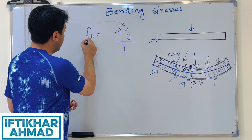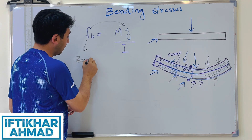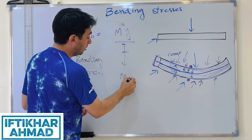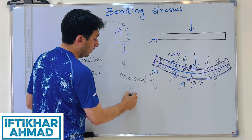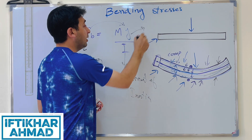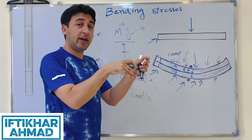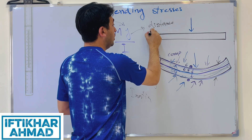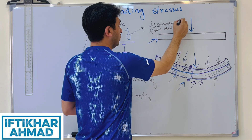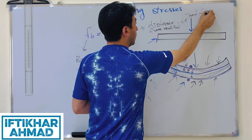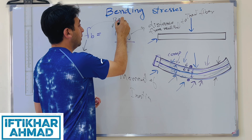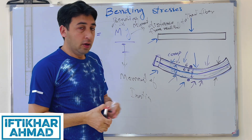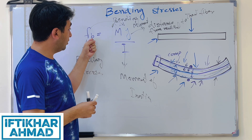So we have the bending stress formula: fb = MY / I, where fb is the bending stress, M is the bending moment, Y is the distance from the neutral axis to the fiber, and I is the moment of inertia.